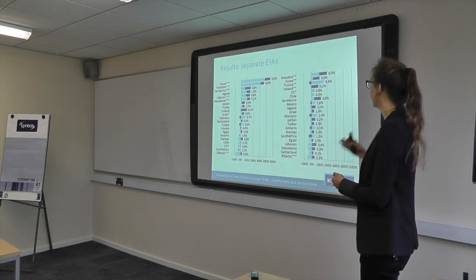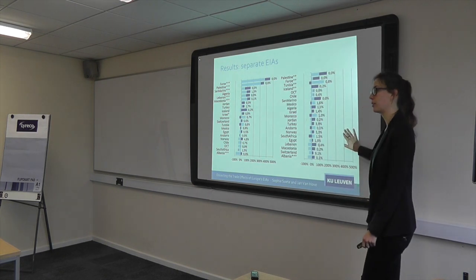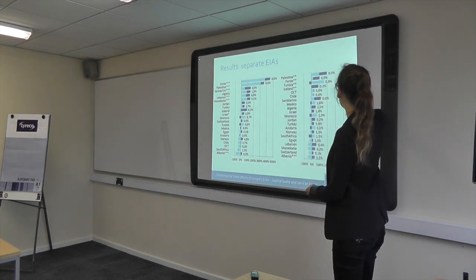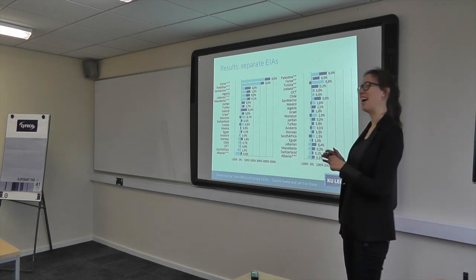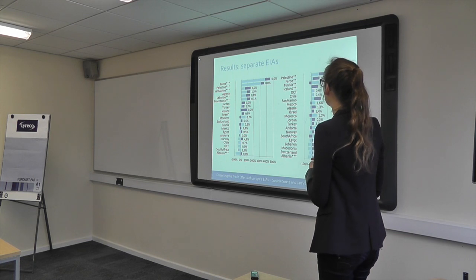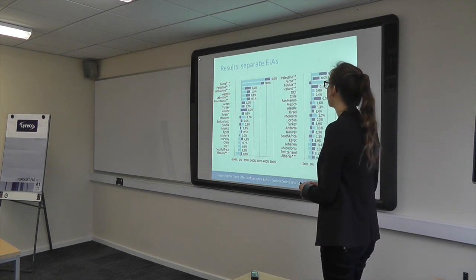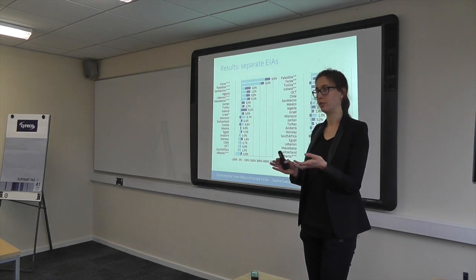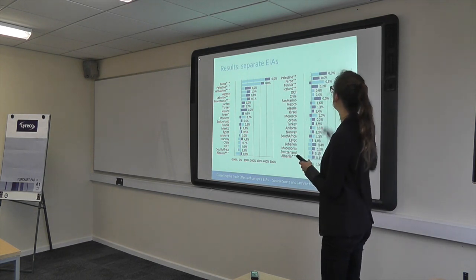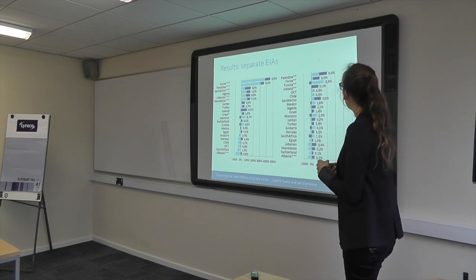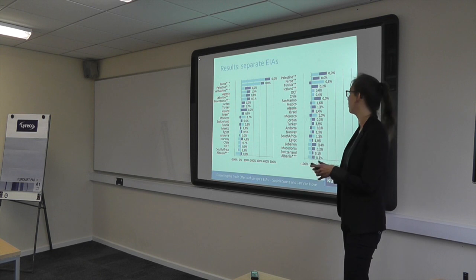We also look at each trade agreement separately. The left-hand side shows effects on imports, and the right shows exports. The percentages next to the bars indicate each country's share of trade — indicating how important the agreement is. For example, the Faroe Islands and Palestine have a big positive impact on imports, but their trade flows are very small, so not that important for Europe overall. On the export side, Palestine and the Faroe Islands also do well. Bars are sorted so the largest combined margin effect is on top.